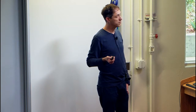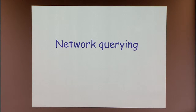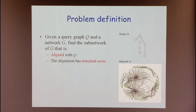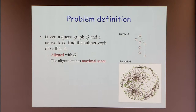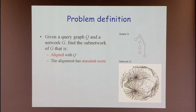I'd like to switch gears to a different variant: network querying. The problem is: given some query subnetwork — some complex known from one species — we want to transfer this knowledge to another species. We take the network of the other species, the less well-known one, and look for instances of the query in this target network. An instance should be somehow aligned with the query, and we want to find the instance with the maximal score.